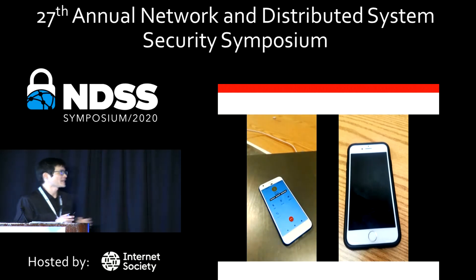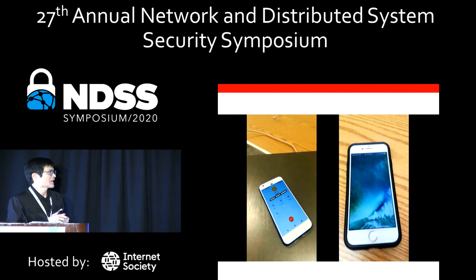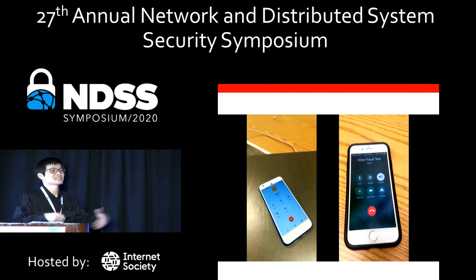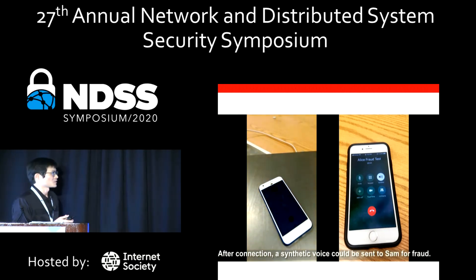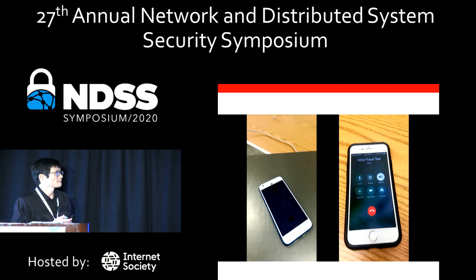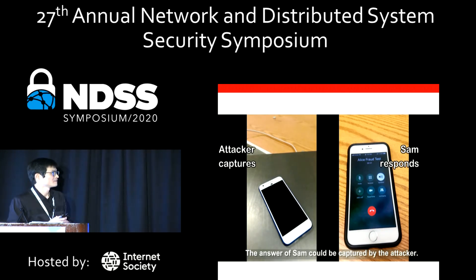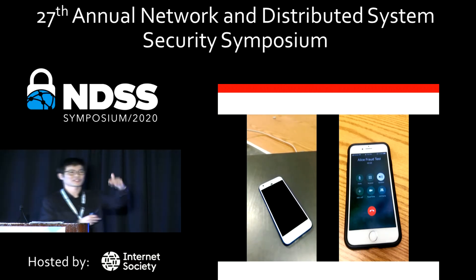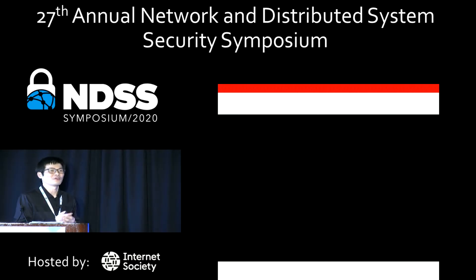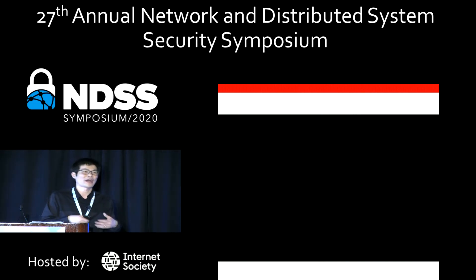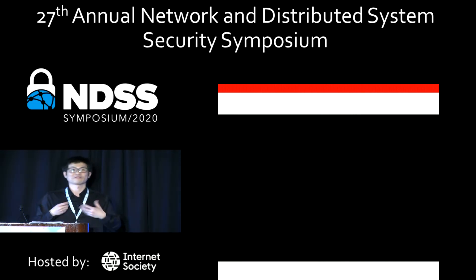Alice will not be able to hear anything. Sam picks up the phone, and the attacker synthesizes Alice's voice to send a synthetic message through the call to Sam, saying she forgot the new access code and asking Sam to provide it. Sam responds with the code, and the attacker captures Sam's response. This is very powerful because we are using the victim's device to call her friends and deceive them. Any fraud call detection like caller ID-based authentication will not work because we are actually using the victim's device to make the phone call.